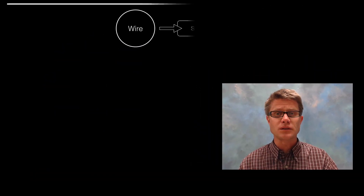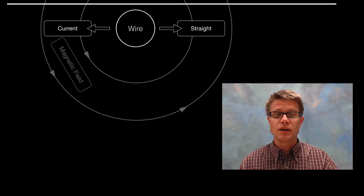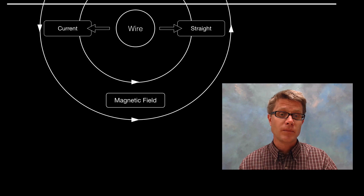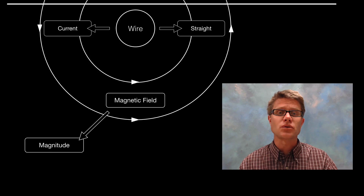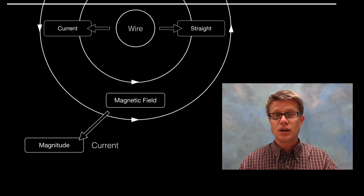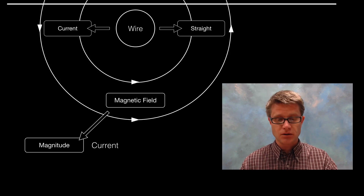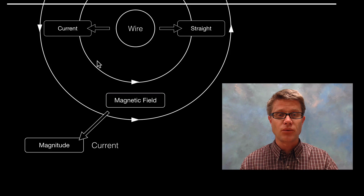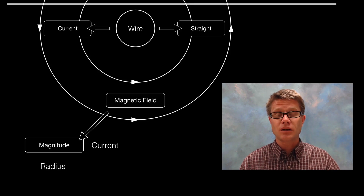If you have a straight wire with a current flowing through it, you're going to have a magnetic field that goes around that wire. We can measure the magnitude of that magnetic field, and it's based on two things. First is the amount of current moving through the wire — there's a direct relationship, so more current means greater magnetic field. Second is the radius, or the distance from the wire — there's an inverse relationship, so the greater the radius, the smaller the magnetic field.